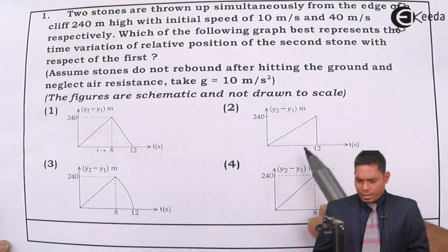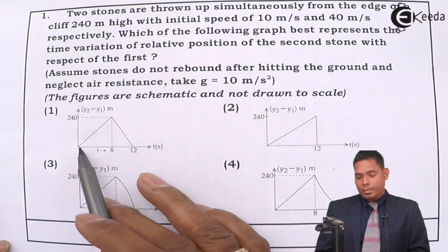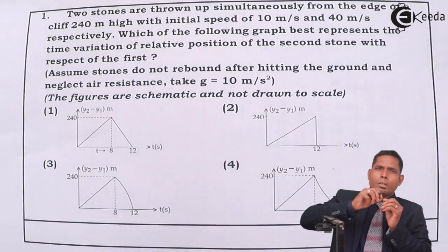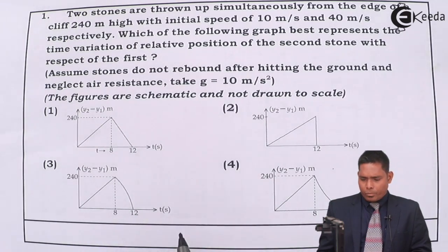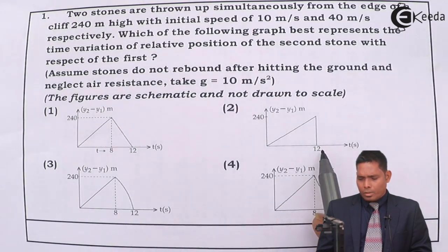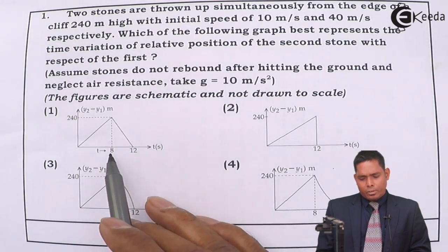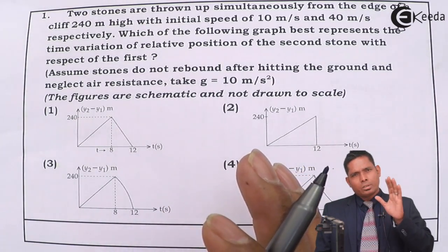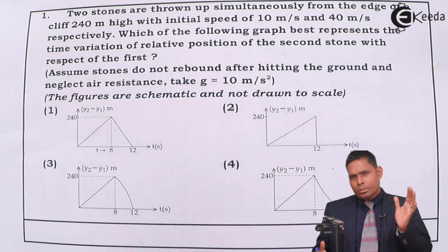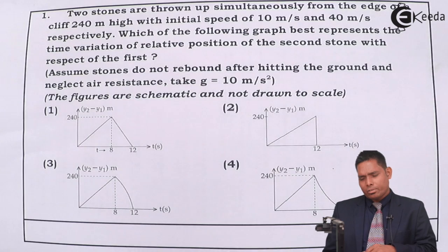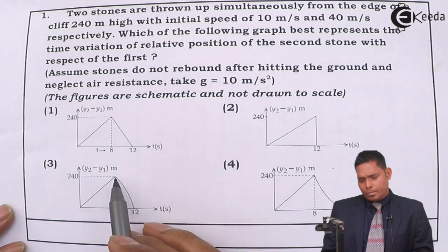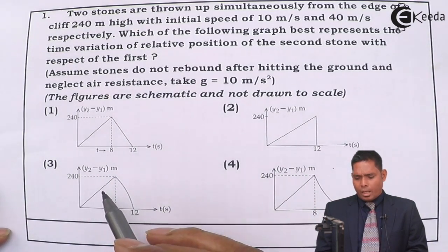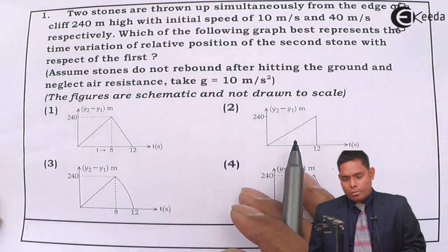So this part of the graph is a straight line. We need to check up to what time — whether it is 8 or 12 seconds. After the first stone hits the ground, the second stone will still be accelerating while the first is at rest, so the relative position will be accelerating — making it a parabolic curve, not constant. Without fully solving, this gives us a good idea of the answer, but let us solve it properly.